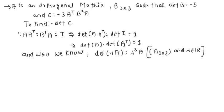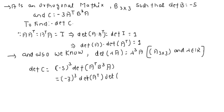So first of all, determinant of C will be equal to minus 3 cube, using this property. Then I will get determinant of A transpose B cube times A. Again you can split it: minus 3 cube times determinant of A transpose times determinant of B cube times determinant of A.